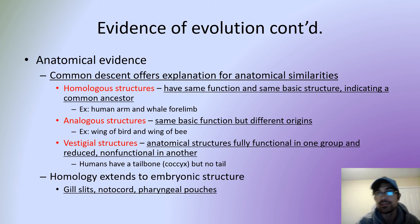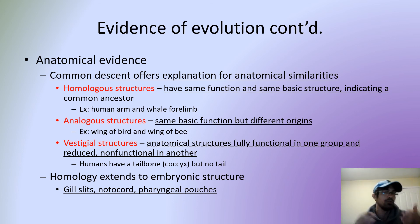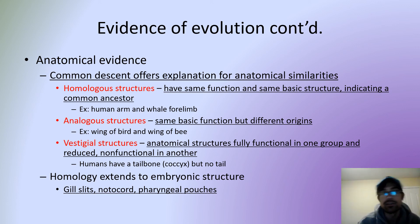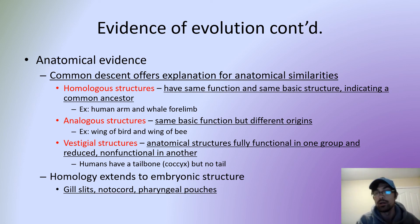There are also analogous structures, which have the same basic function but different origins. Wings, for example — the wing of a bird is quite different from the wing of a bat, and the wing of a bee is different from that of a bird. They have the same function but are adapted differently. Then there are vestigial structures — anatomical structures that are fully functional and have a purpose in one species but are reduced or completely non-functional in another.